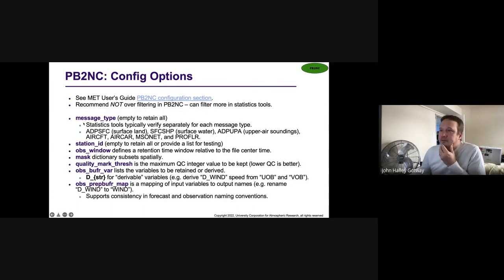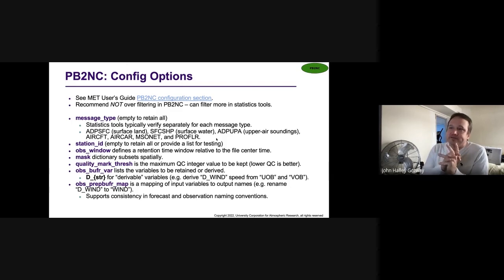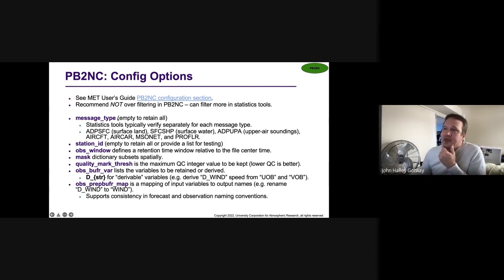The message type is one important detail in prep buffer files. Each observation is associated with a message type — mnemonics like ADPSFC for surface land, SFCSHP for surface water, ADPUPA for upper air sounding observations, and then aircraft, aircar, mesonet, and profiler. In general when doing verification in point stat and ensemble stat, the statistics are typically computed separately for each message type. You can filter the obs by message type; if you leave the configuration option empty, it will retain all available ones.